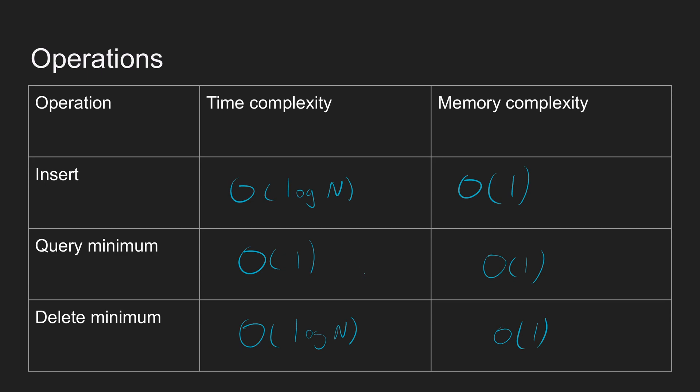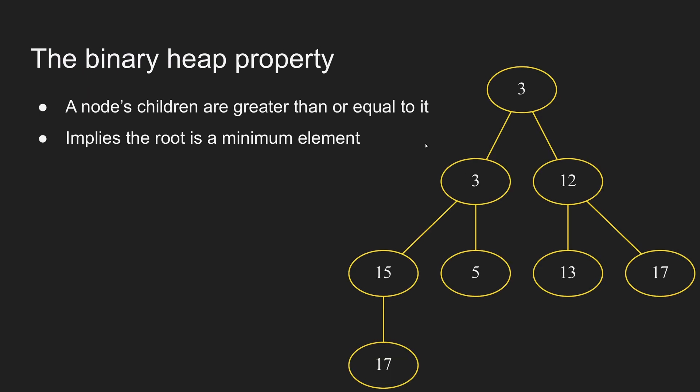Now let's go through these operations and see how they work and why they have these complexities. The binary heap property is that a node's children are greater than or equal to it. The operations of a binary heap are based on temporarily breaking this property, or invariant, and then fixing it. I encourage you to pause the video and try to think about how you would implement each of these three operations: insert, delete, and query minimum.